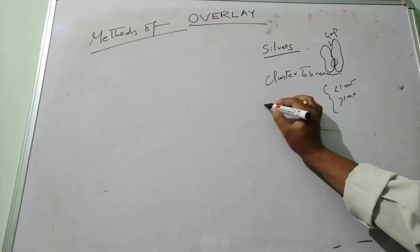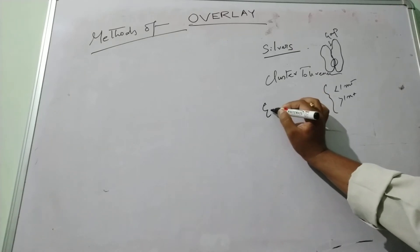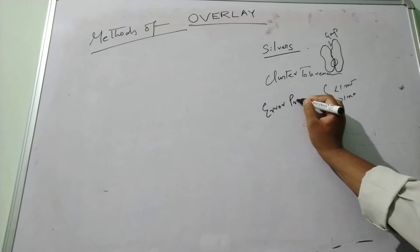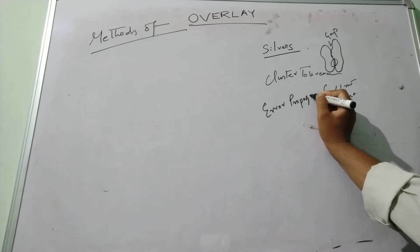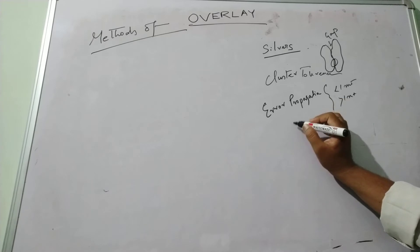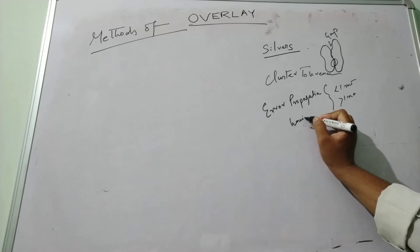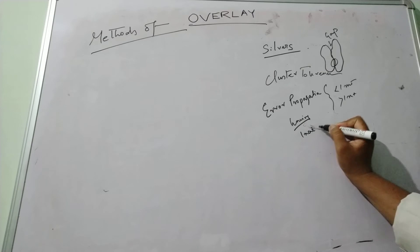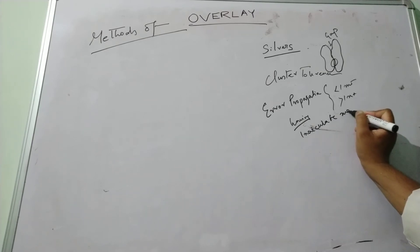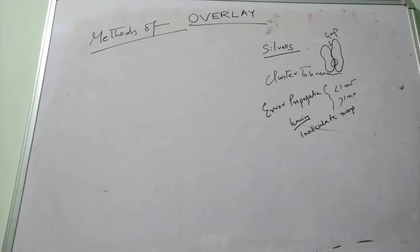Next is error propagation. If the input layer contains an error, it can create an inaccurate map. These are the common errors that can occur during the overlay operation.